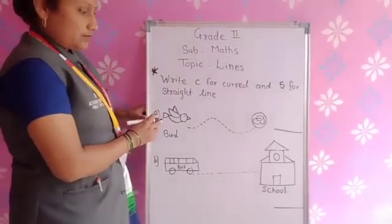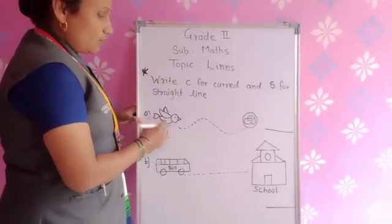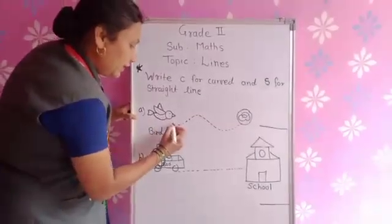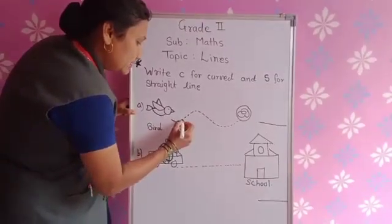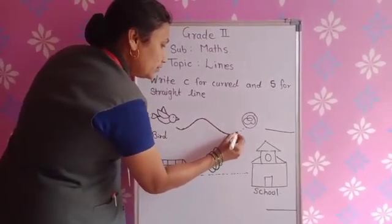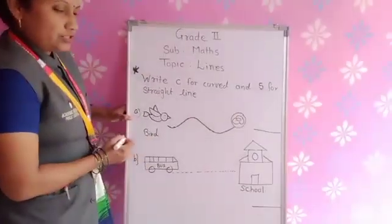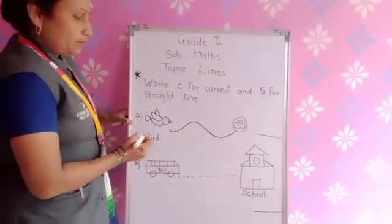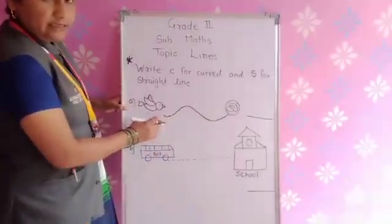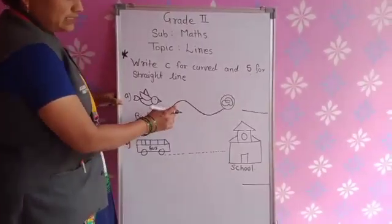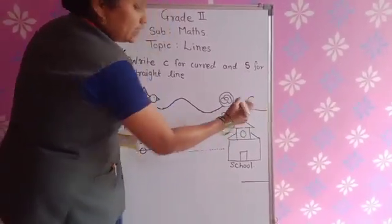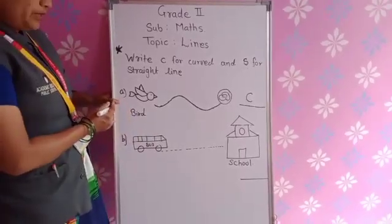This is the bird. Which line do you observe here? Trace this line. In your notebook you have this question — trace this line. Tell me which line is it? Very good. This is a curved line. So write C in front of that picture.